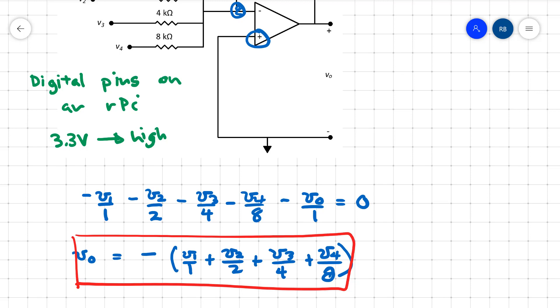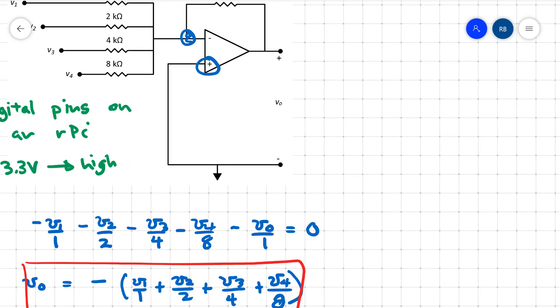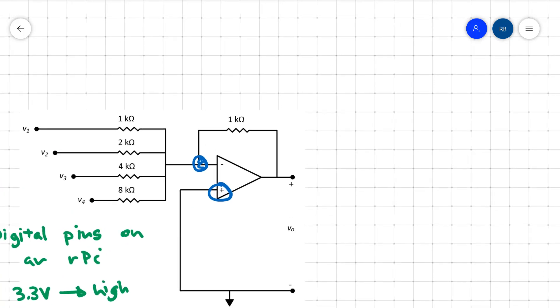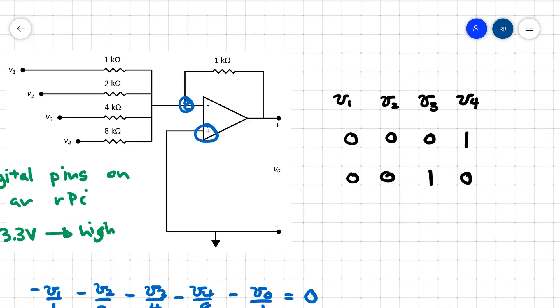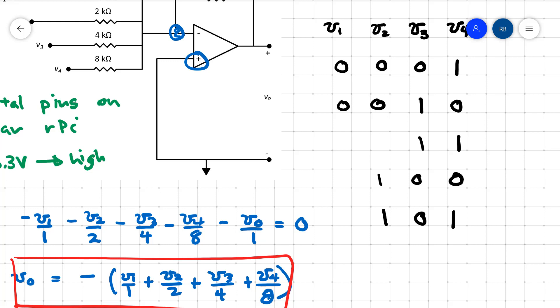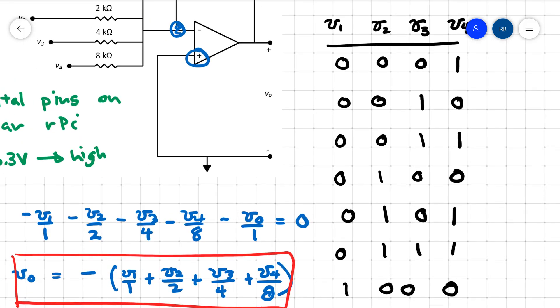If we look at our digital input here, we have V1, V2, V3, and V4. Let's say we have 0, 0, 0, 1. Then the next one in binary would be 0, 0, 1, 0. Then 0, 0, 1, 1. Then 0, 1, 0, 0. Then 0, 1, 0, 1. These are all the digital combinations.